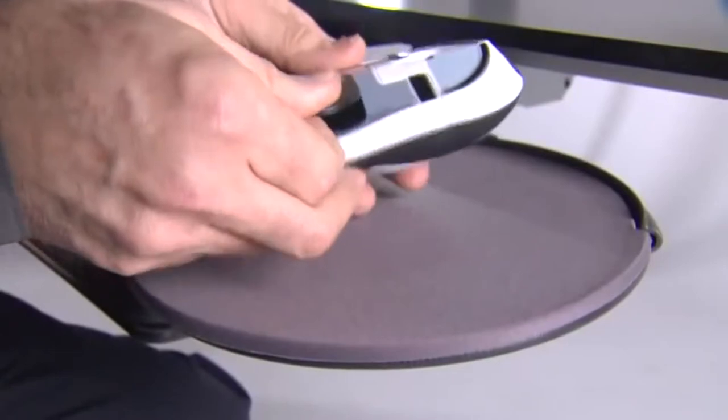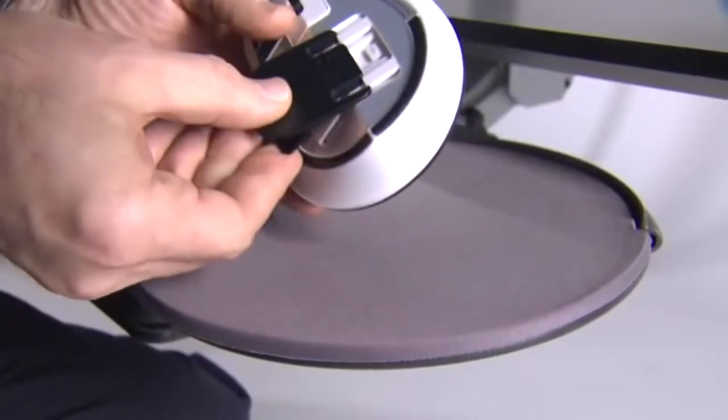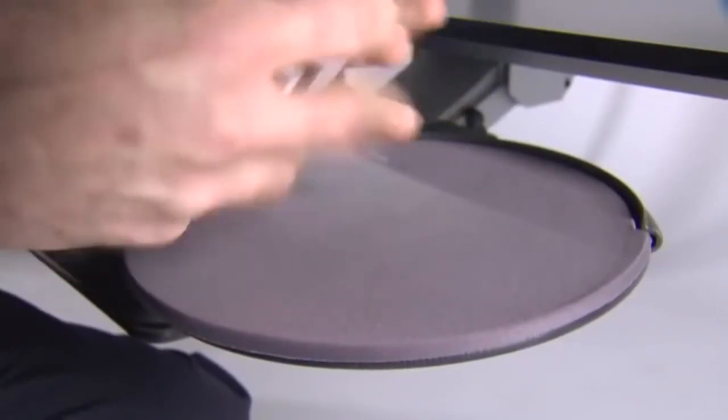HumanScale calls the mouse the switch mouse because it accommodates both right- and left-handed users in the same design. You flip the mouse over, and there's a wedge piece, and you simply remove it, turn the mouse, slide it in the other side, turn it back over, and it can go from right- to left-handed use very easily.